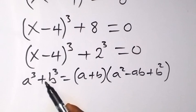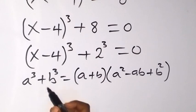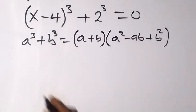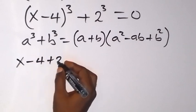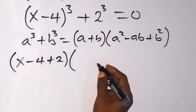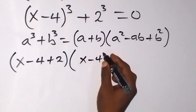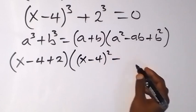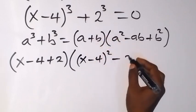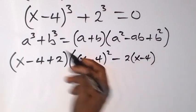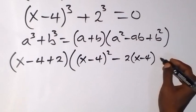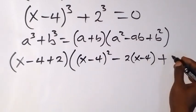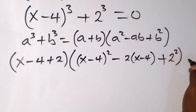If we treat the left-hand side using this identity, taking (x minus 4) as a and 2 as b, we get (a plus b), which is (x minus 4 plus 2), multiplied by a squared — that's (x minus 4) squared — then minus ab, which is minus 2 times (x minus 4), then plus b squared, which is 2 squared. This equals zero.